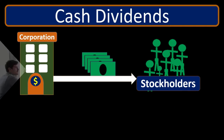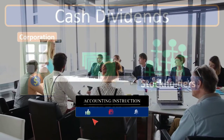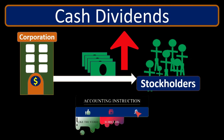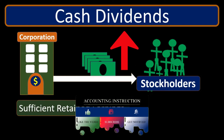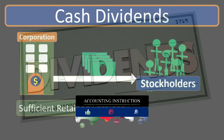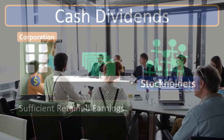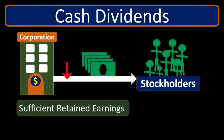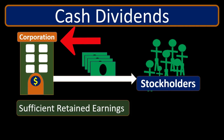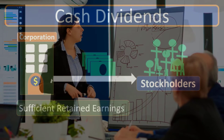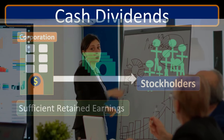The board of directors is involved in determining what the dividends will be and then goes through the process of distributing them. The decision involves a lot of factors. One restriction is that we typically need to have retained earnings available. There are two parts of the equity section in a corporation: one represents the investments by the owners — common stock and paid-in capital — and the other represents earnings accumulated and not yet distributed as dividends.